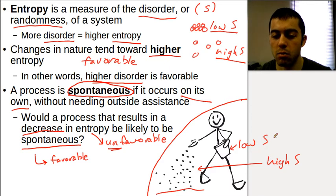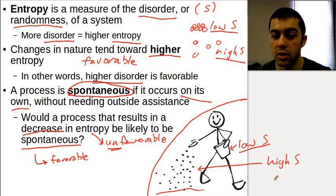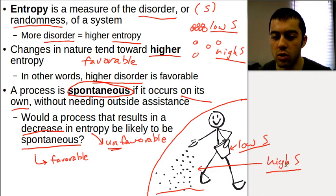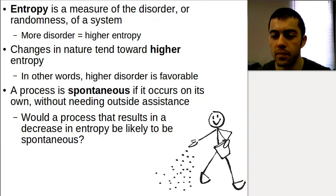If it's more ordered or structured, that's going to be low entropy because entropy is disorder. And if it's more unstructured, disordered, random, that's going to be higher entropy.